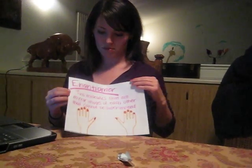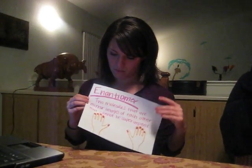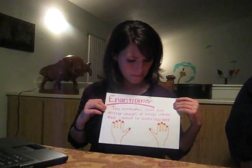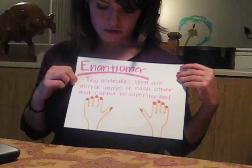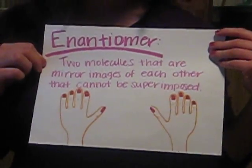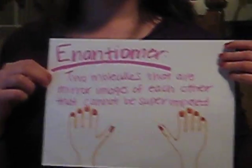What's an enantiomer? Enantiomers are two molecules that are mirror images of each other and cannot be superimposed — just like your hands!